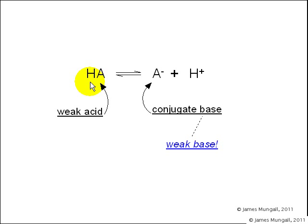If we have a weak acid HA, and then if that breaks apart into A minus and H plus, the A minus is called the conjugate base and it will be a weak base because this reaction can go backwards. In other words, it can pick up an H plus so it behaves as a base.